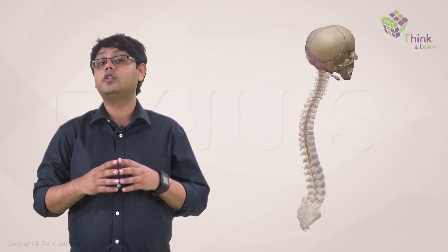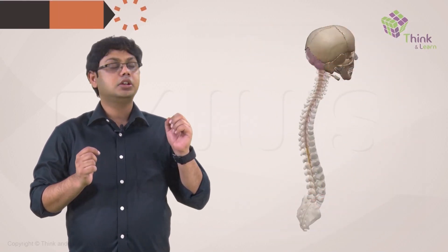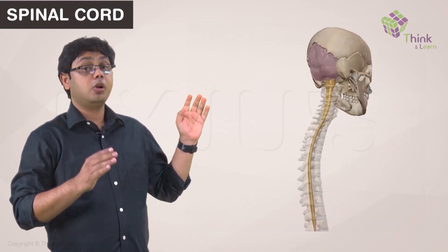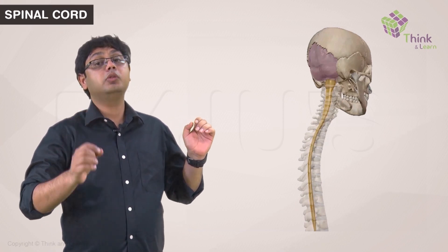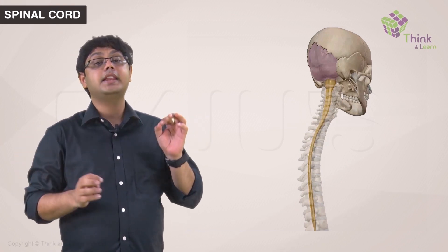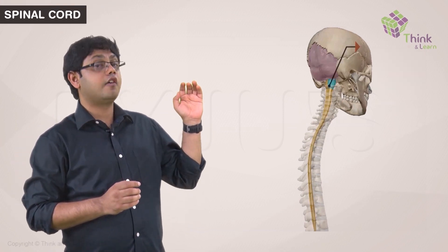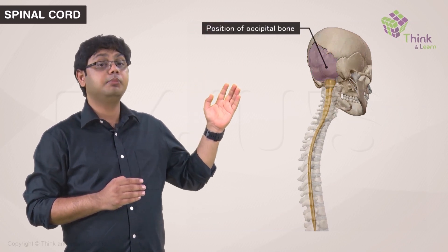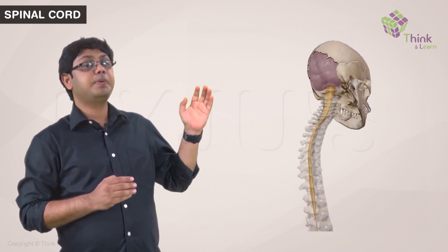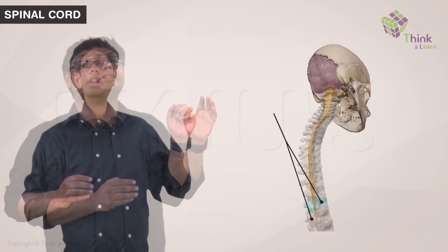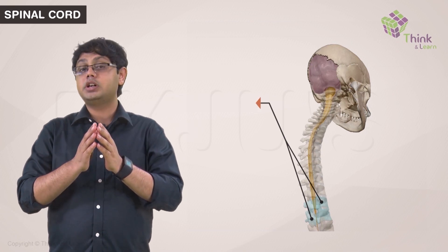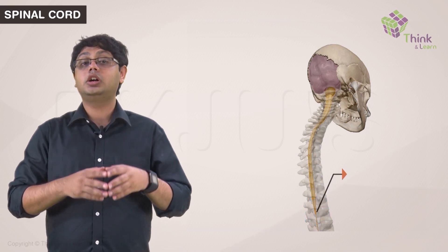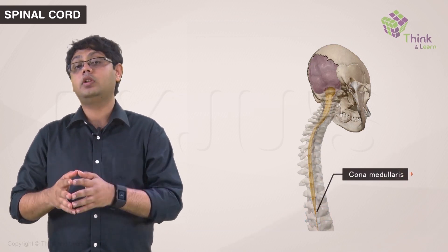Let's look at the second part of the CNS, the spinal cord. We spoke about earlier how the spinal cord is an extension of the medulla. It extends from the occipital bone to the space in between the lumbar vertebrae, where it tapers into a cone called the conus medullaris.